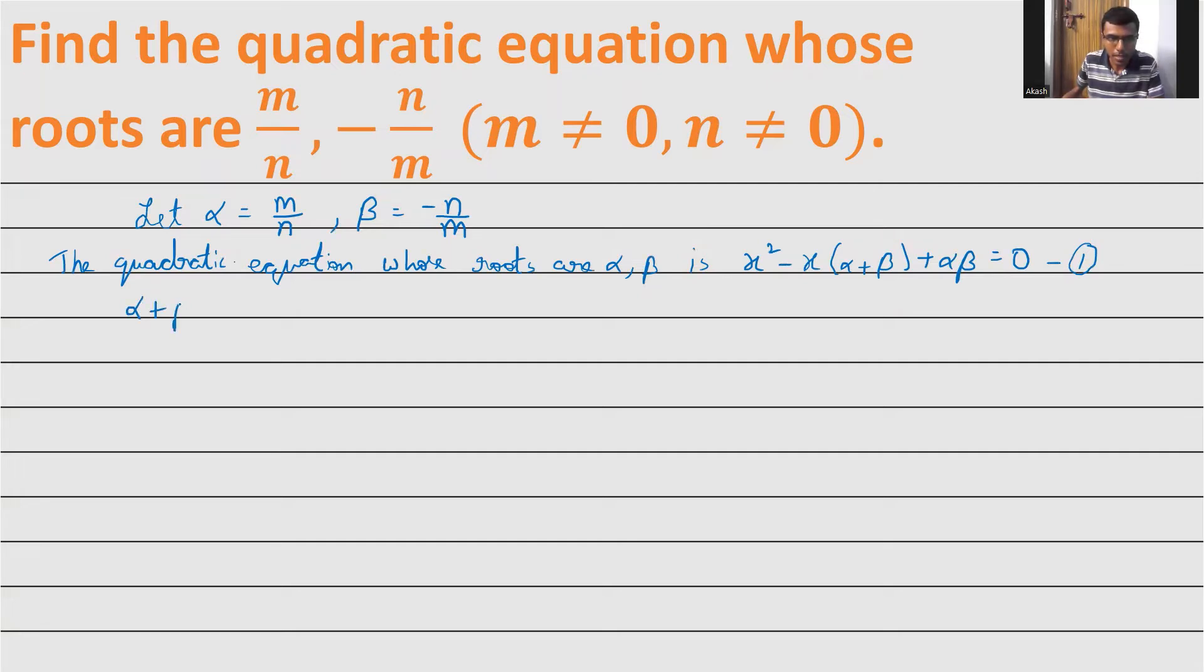Alpha plus beta - stay with me, this involves a bit of calculation - is m/n plus (-n/m), which is m/n minus n/m. I'm going to take LCM. The denominators are n and m, so the LCM is mn. I'll multiply and divide by m here, and multiply and divide by n here.